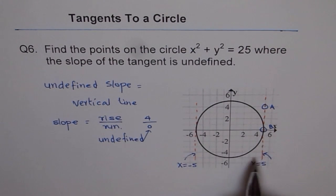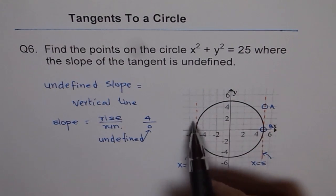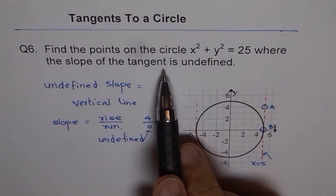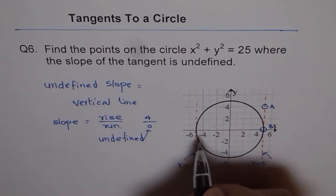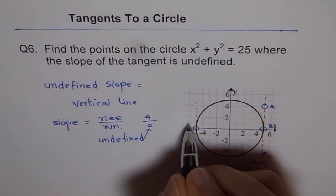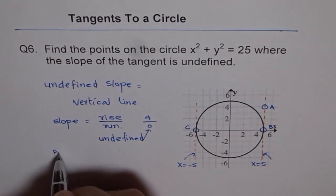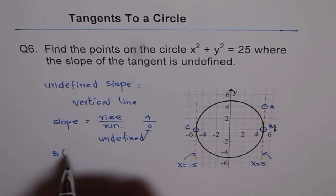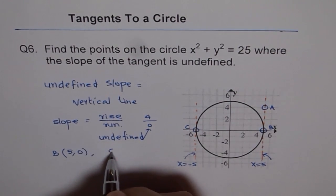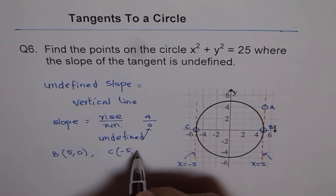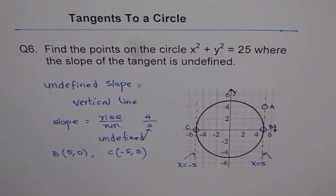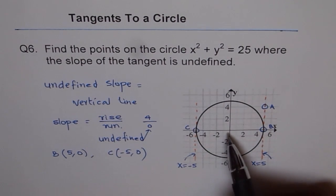So we found two points on this circle where the slope of the tangent is undefined. So the points are, let me call this point as B and this point as C. So the points for us are B, which is (5, 0) and C, which is (-5, 0). So those points are also the x-intercepts for this circle with center at origin.